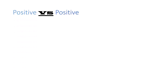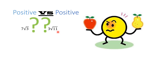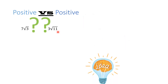Moving on to the next case: positive versus positive. If we have 7√3 and 3√11, which one is greater and which one is smaller? I don't know — it's like comparing an apple to a pear. They are not in the same form: one is 7√3 and the other is 3√11, so I cannot compare them directly.